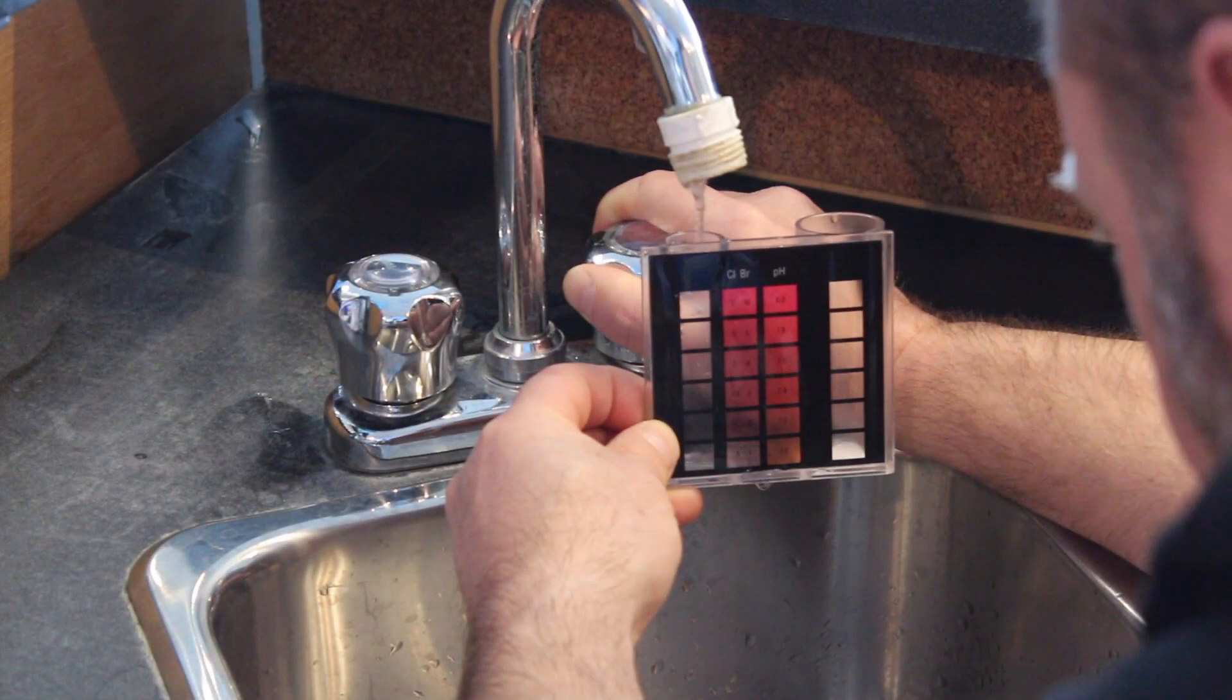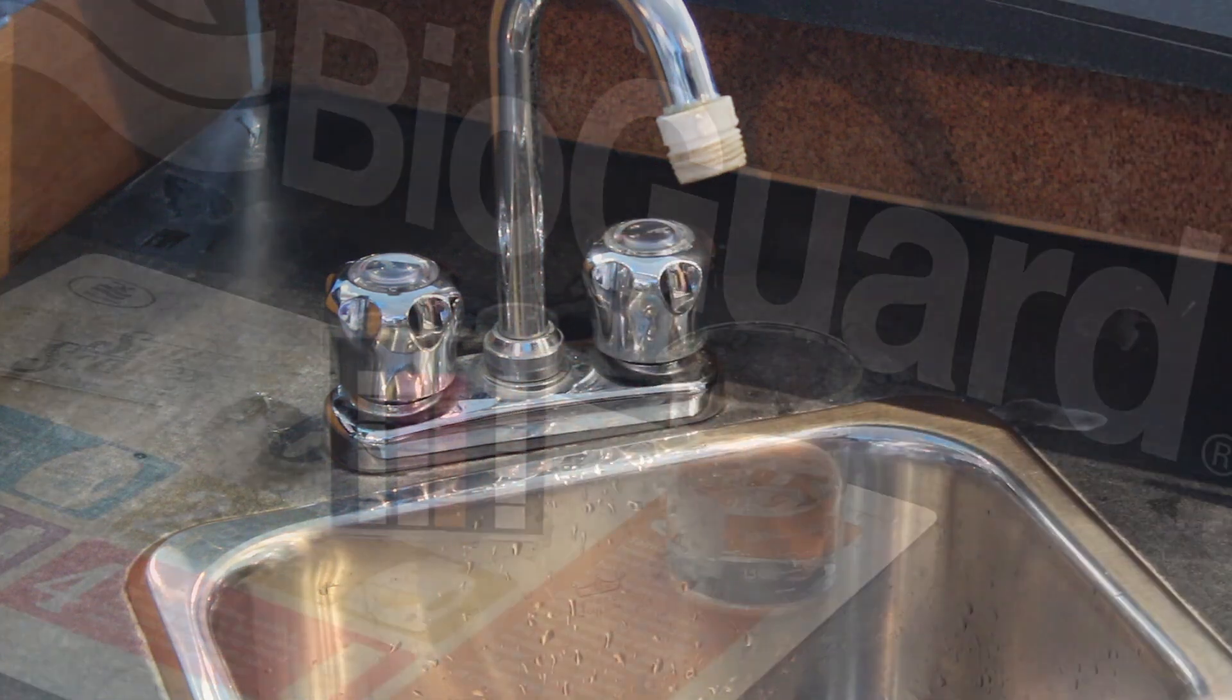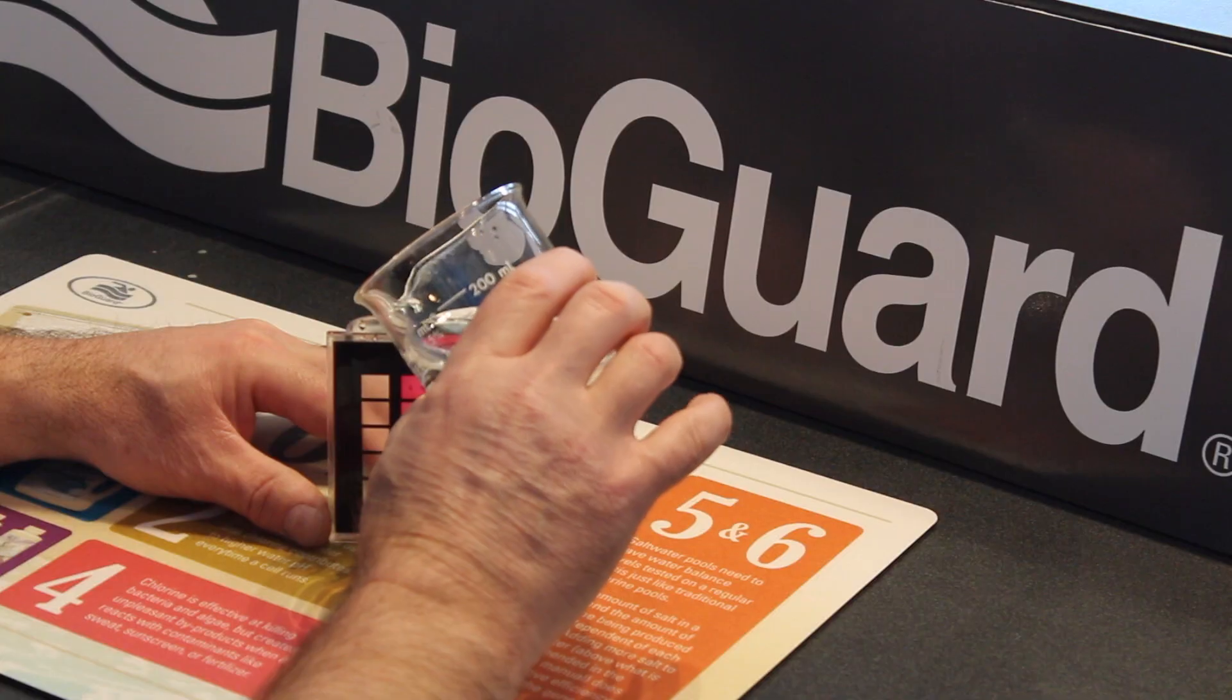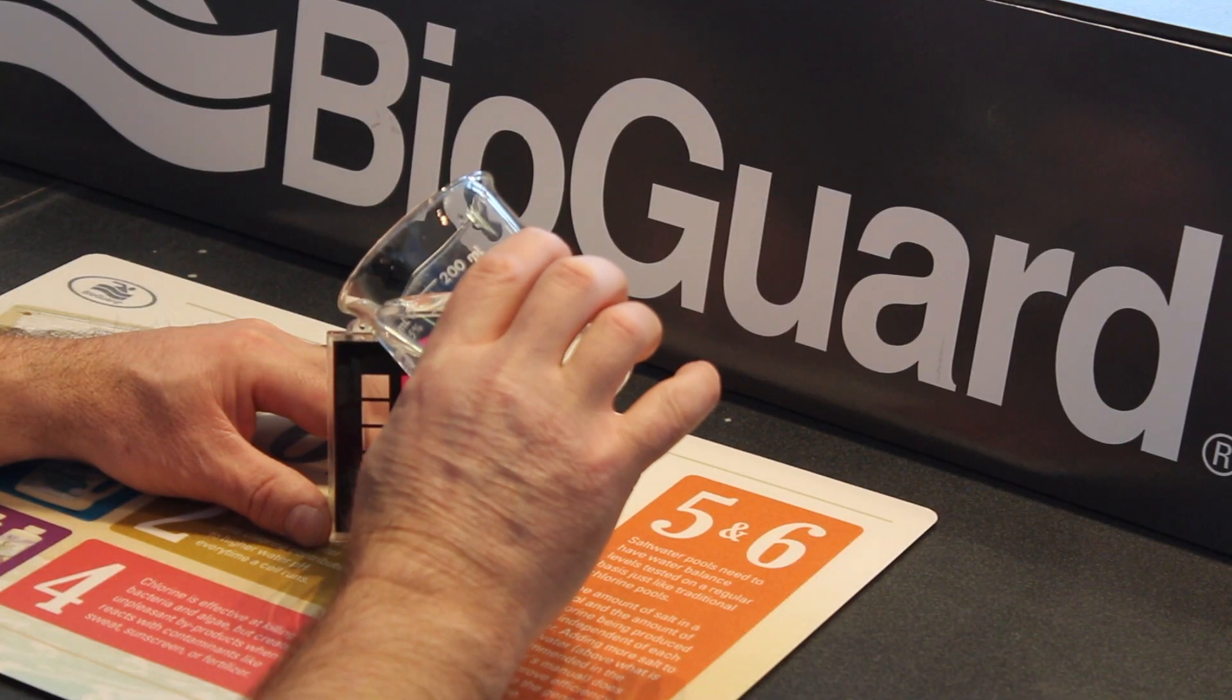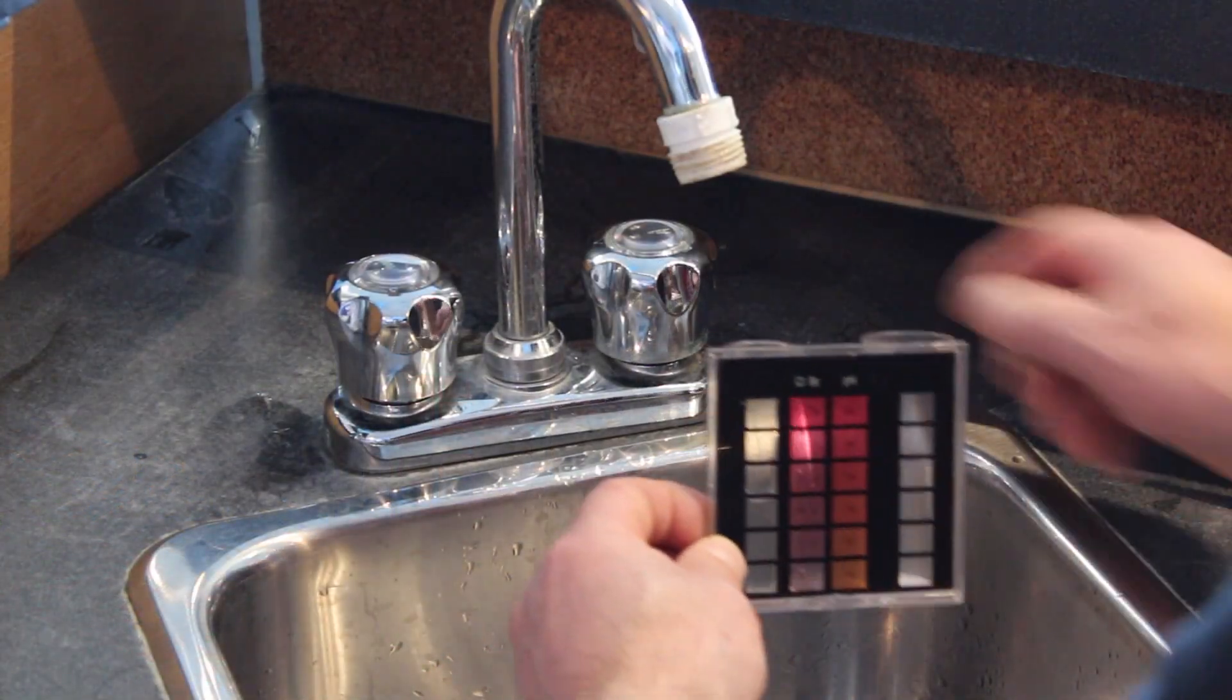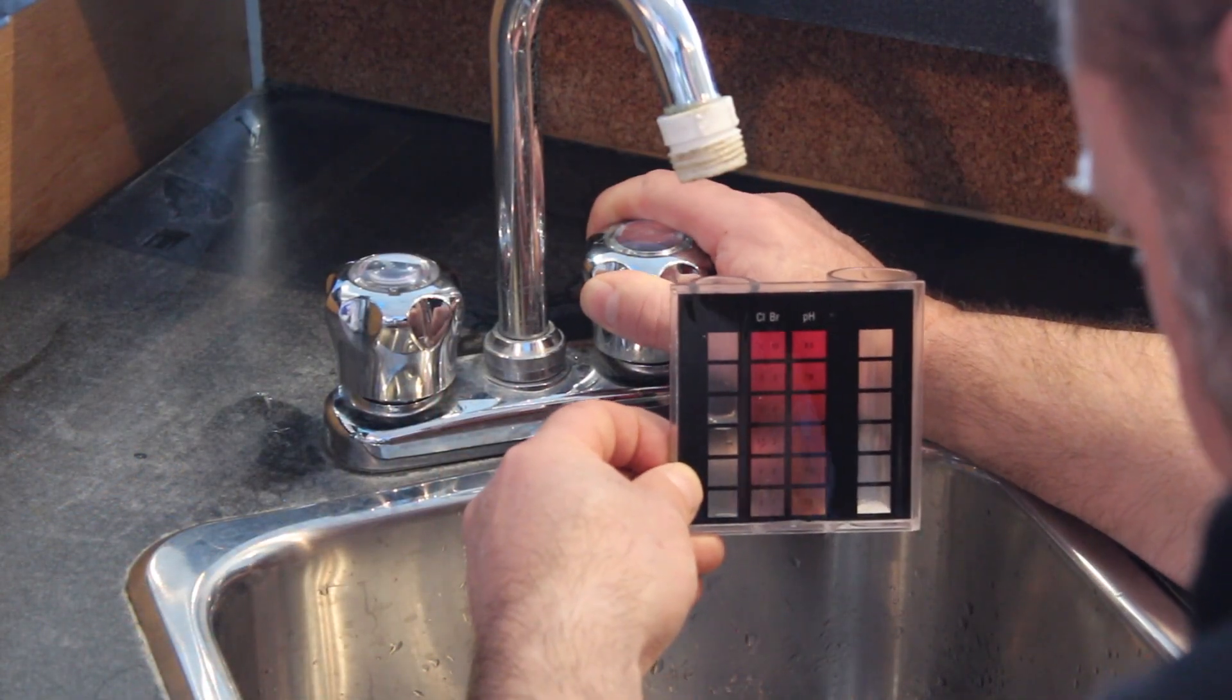Fill the tube to the 4.5ml line with pool water. Then fill to the 9ml mark with tap water.